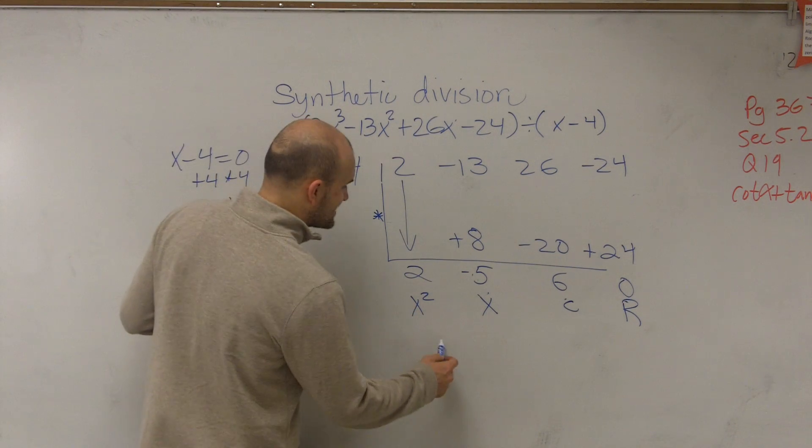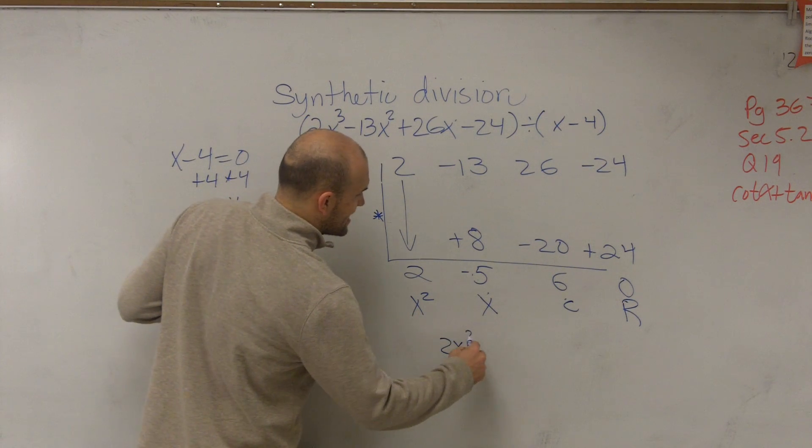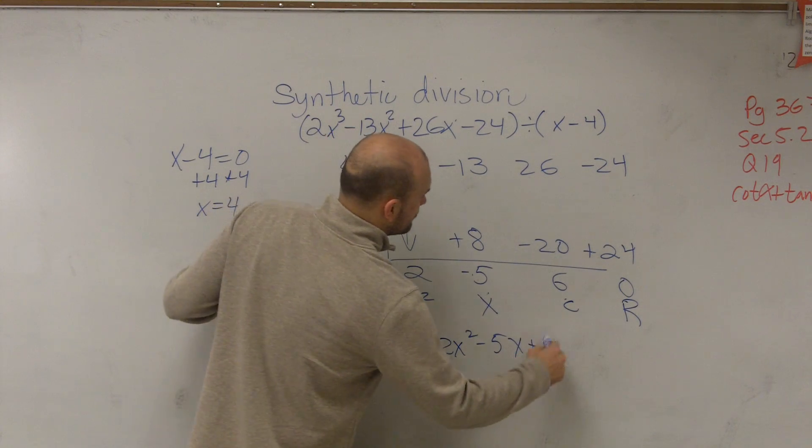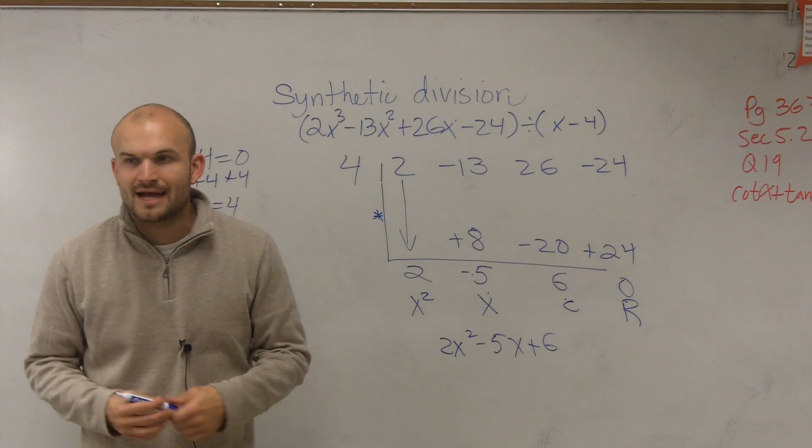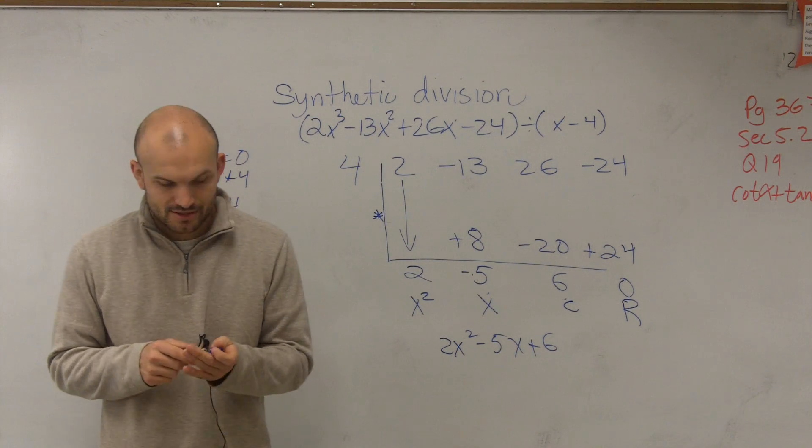So therefore, your final answer is going to be 2x squared minus 5x plus 6. And obviously, since you're not adding your remainder, that's going to be it. That's your answer.